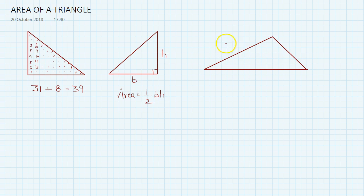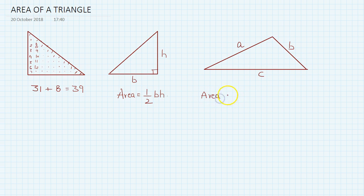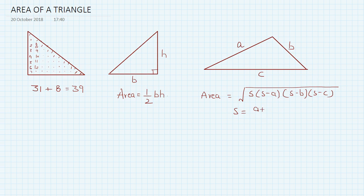If it is not a right-angle triangle, there is another method called Heron's formula — or Hero's formula — named after Hero of Alexandria. It states that if a, b, c are the sides of a triangle, the area equals the square root of s(s−a)(s−b)(s−c), where s is the semi-perimeter: add all the sides and divide by two.